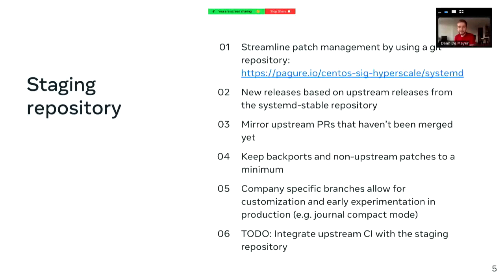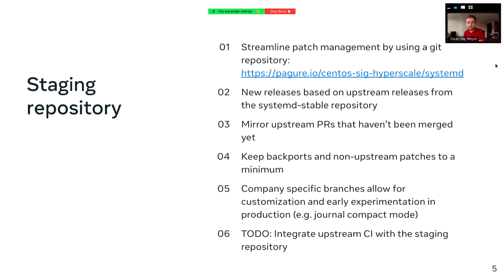The backport itself consists of a few different parts. The first part is the staging repository — a Git repository on Pager which we use to streamline patch management for the backport. Instead of maintaining individual patch files in the RPM repo itself, we do it all in a Git repository. The Git repository is a fork of systemd, where whenever we do a new release, we pick the latest point release from the systemd stable repository on GitHub, and then apply any patches and backports we need on top, and sometimes in-progress pull requests as well.